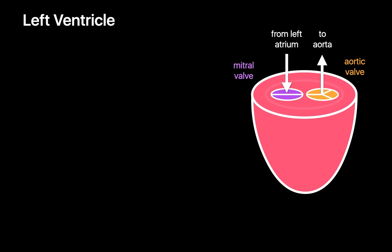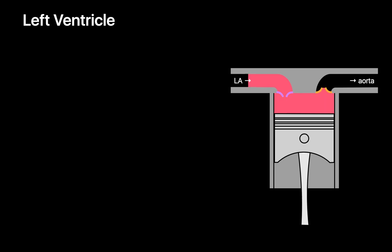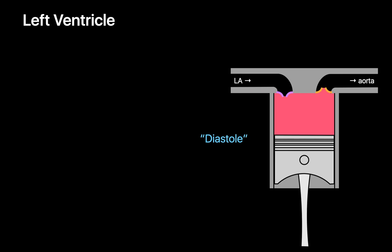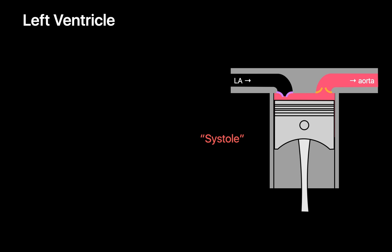As a former engineer, it's a little easier for me to conceptualize the left ventricle as a more familiar variety of positive displacement pump — a piston pump. Using this analogy, during the downstroke, fluid from the left atrium flows across the mitral valve and into the left ventricular chamber. Medical folks like to refer to this part of the pump cycle as diastole. During the upstroke, fluid in the left ventricular chamber flows across the aortic valve and into the aorta. Medical folks refer to this part of the cycle as systole.